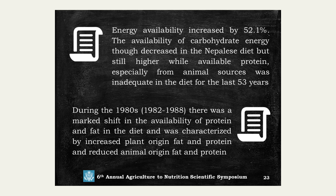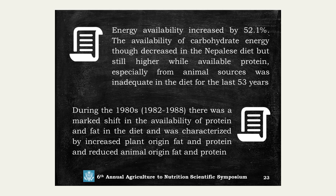In conclusion, energy availability increased by 52%. The availability of carbohydrate energy, though decreasing in the Nepalese diet, is still higher than the recommended intake. Available protein, especially from animal sources, was inadequate in the diet over the 53 years. During the 1980s, specifically between 1982 and 1988, there was a marked shift in the availability of protein and fat, characterized by increased plant-origin fat and protein and reduced animal-origin fat — indicating a significant policy or behavioral change in the Nepalese diet.